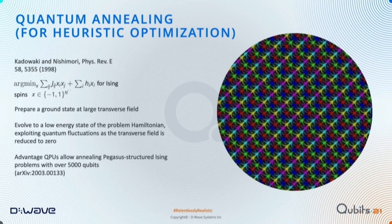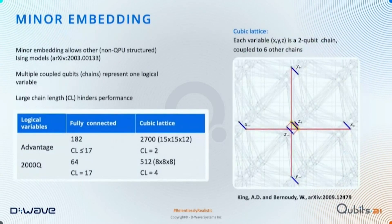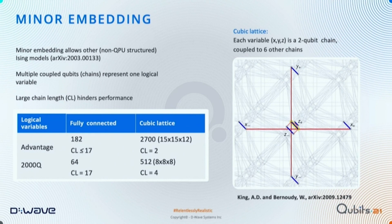We can do this for Pegasus-structured problems with over 5,000 variables, but we're not restricted to Pegasus-structured problems because we can use minor embedding. In minor embedding, one variable is represented not by one qubit but by several qubits. Those qubits can collectively represent more interesting connectivity patterns in the processor while still behaving like a two-state object towards the end of the anneal, so we can use them as logical spins.